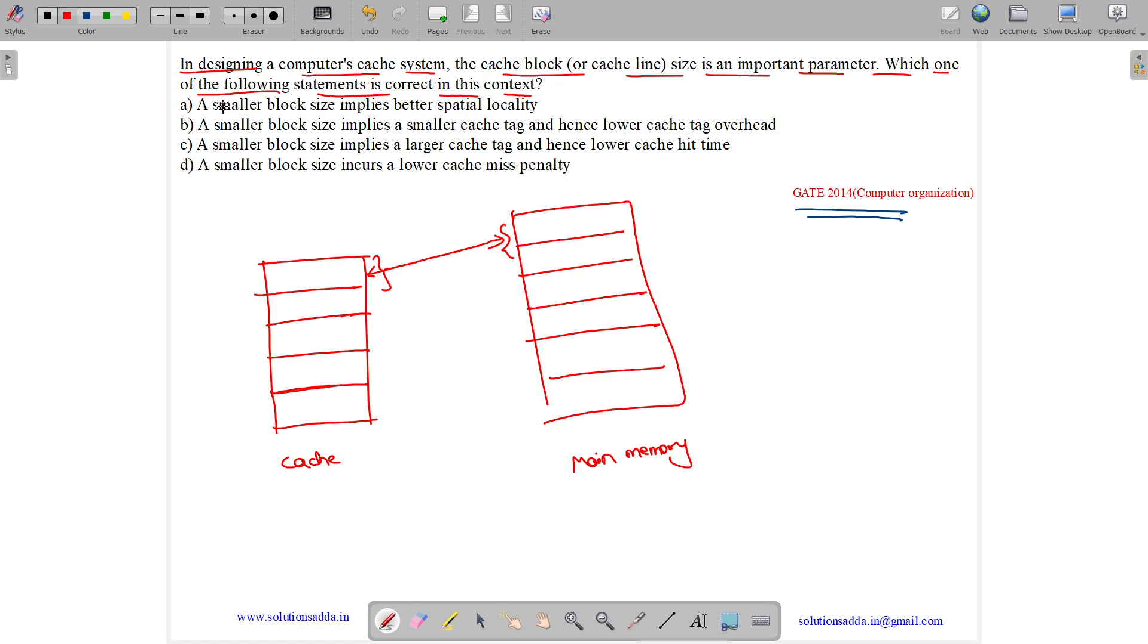Now it is saying a smaller block size implies better spatial locality. So what is spatial locality? Spatial locality means if we have a cache block and we are executing an instruction i, then there is high possibility that instruction i plus 1, or if it is ix then instruction ix plus 1, will access the same block.